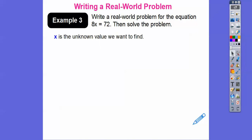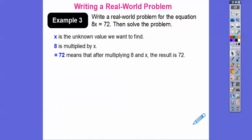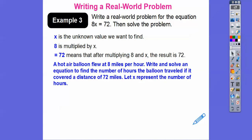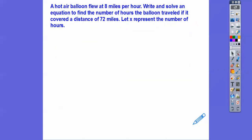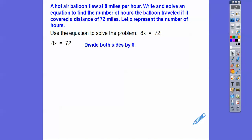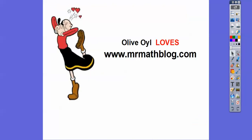Now let's write a real-world problem for the equation 8x = 72 and solve it. Since 8 is multiplied by x, think of something 'per' unit — like speed. A hot air balloon flew at 8 miles per hour. Write and solve an equation to find the number of hours the balloon traveled if it covered 72 miles. Let x represent the number of hours. Using 8x = 72, divide both sides by 8 and get x = 9. The balloon traveled for 9 hours.